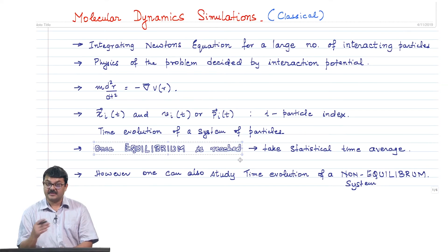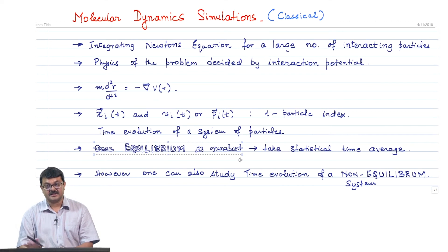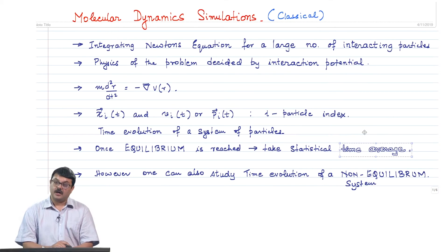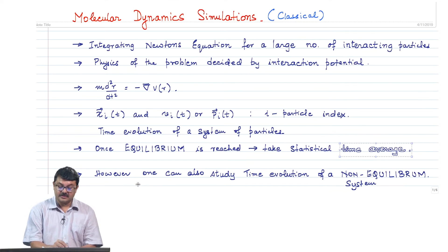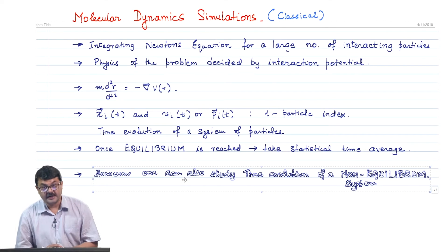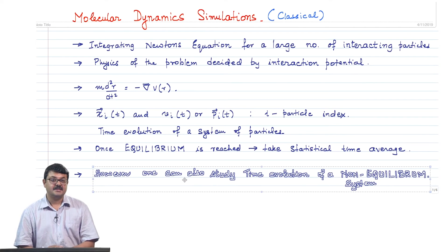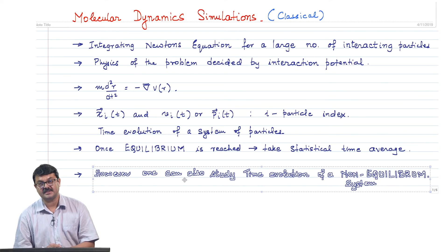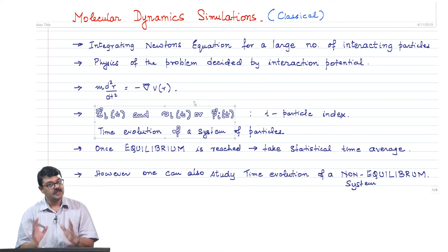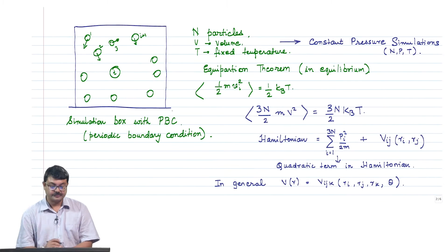In equilibrium, the system is going from one microstate to the other, but as a function of time. When you take a statistical average you are essentially taking a time average of the system. However, in molecular dynamics one can also study the time evolution of a non-equilibrium system. If the initial positions and velocities are not in equilibrium, you can study how the system moves towards equilibrium, since you have access to positions and velocities of all the particles.